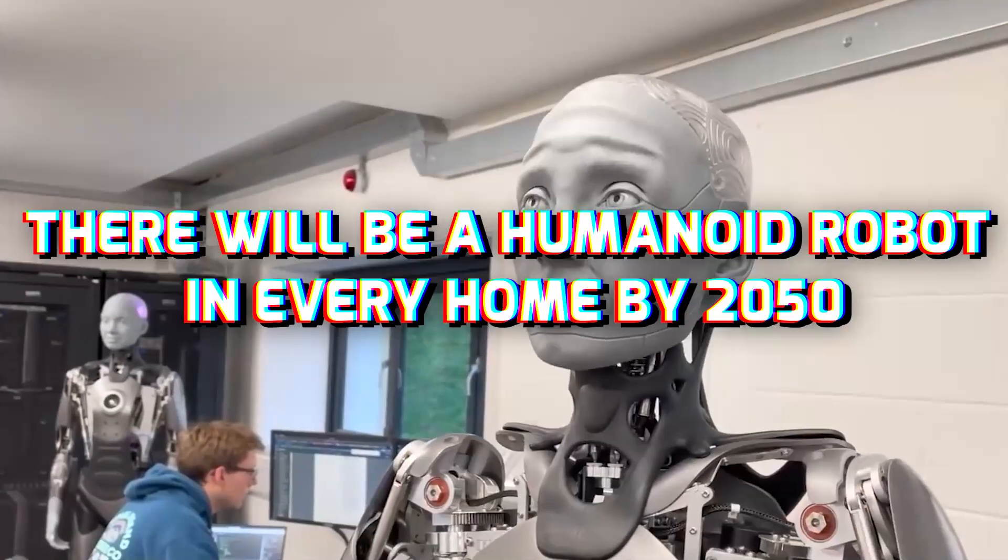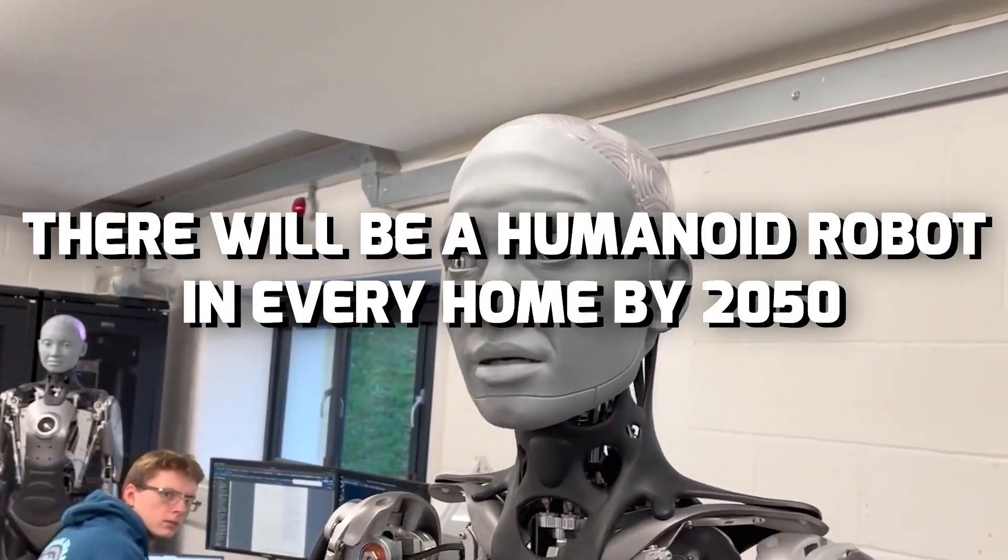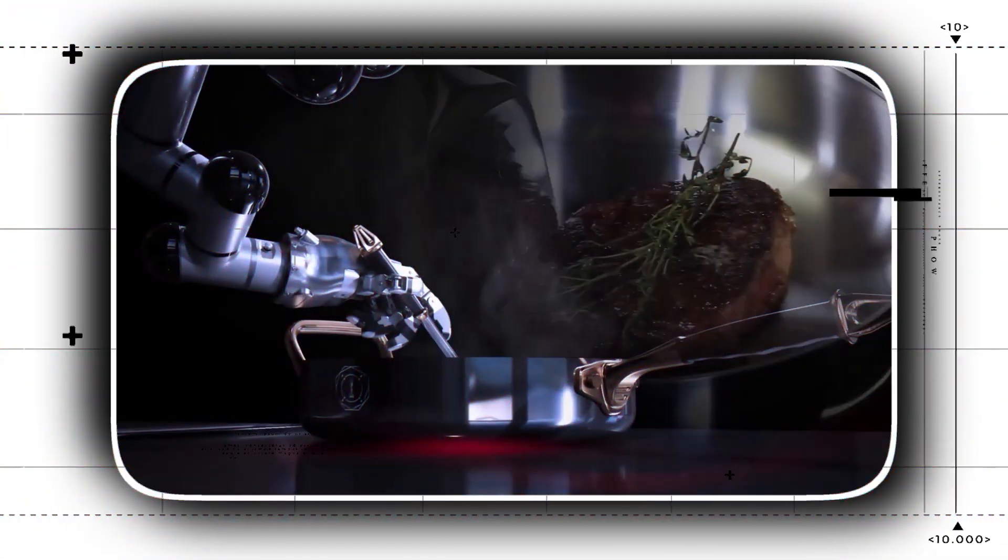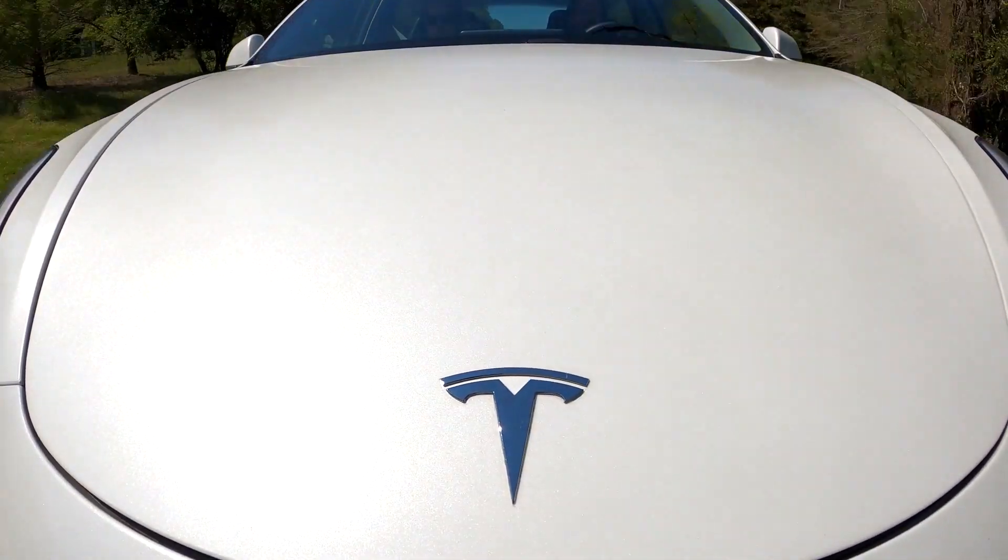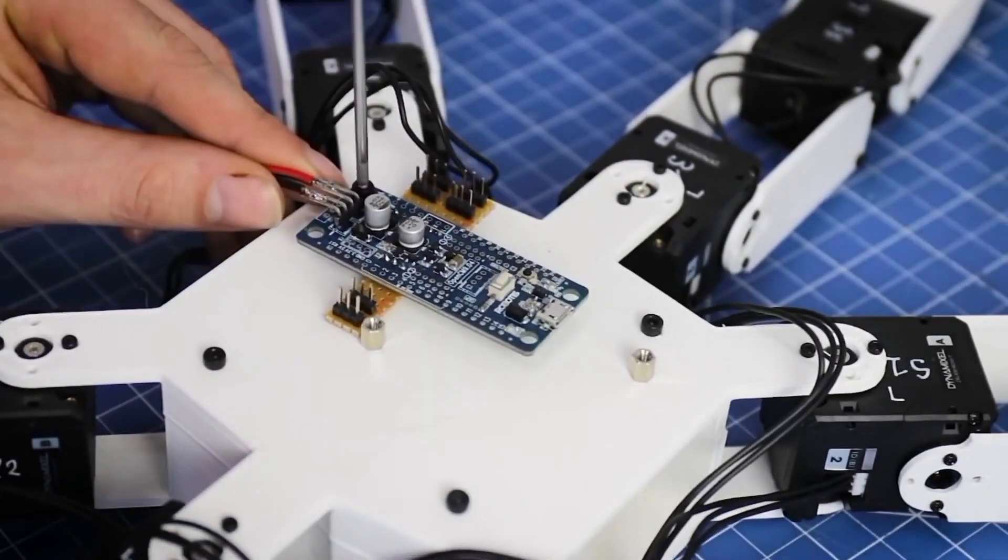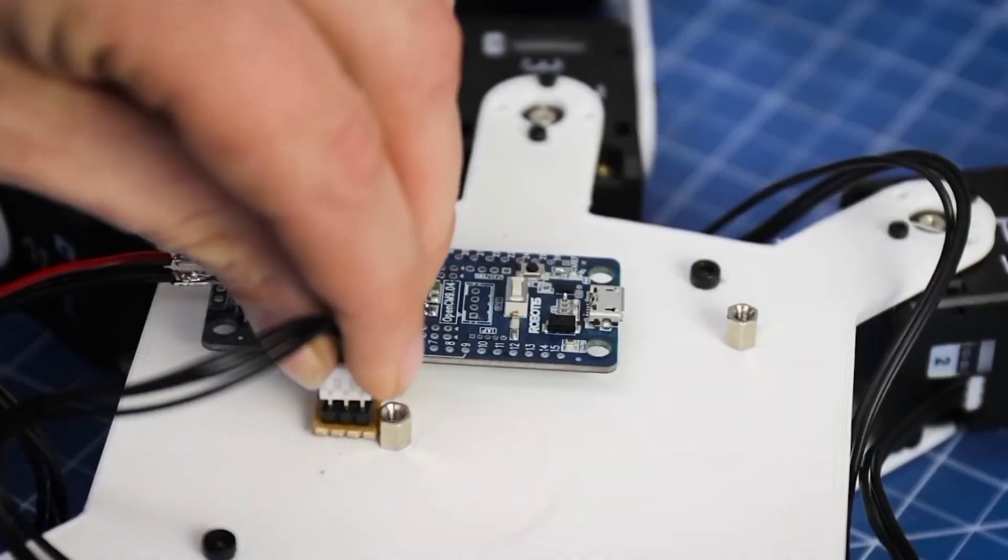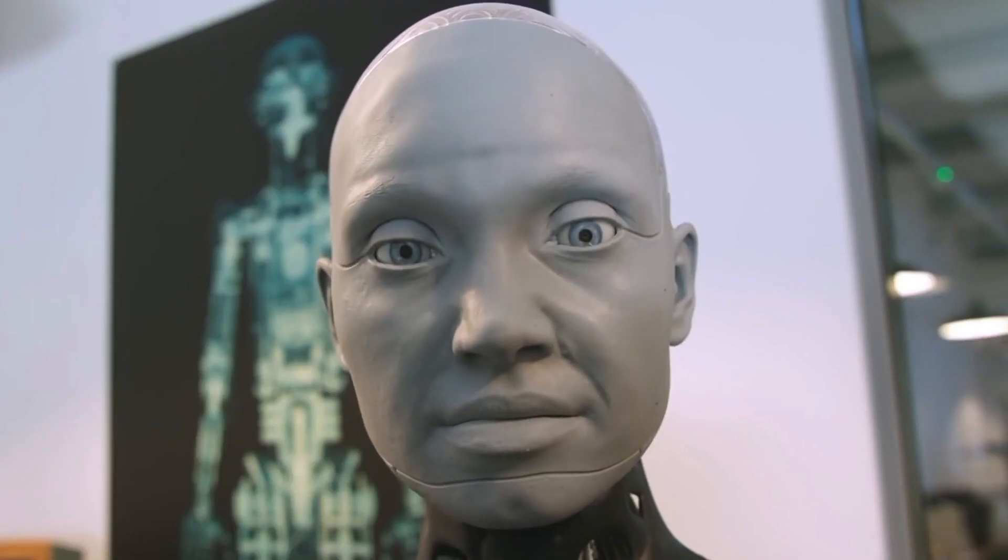Elon Musk: There will be a humanoid robot in every home by 2050. Home robots with humanoid assistance could be the next big thing. Elon Musk outlines how Tesla's developments of full self-driving is transferring into its robotics work, and how most houses will likely have humanoid robots in the not-too-distant future.